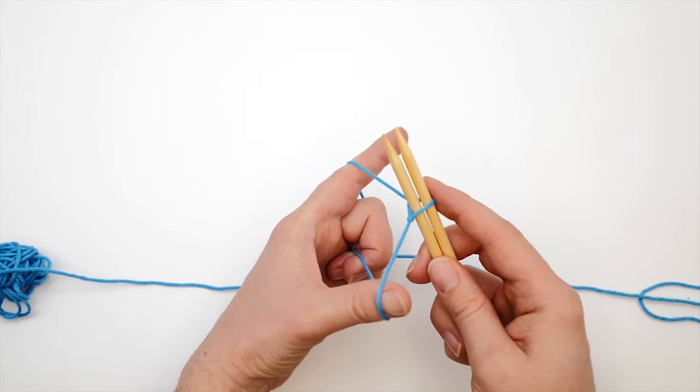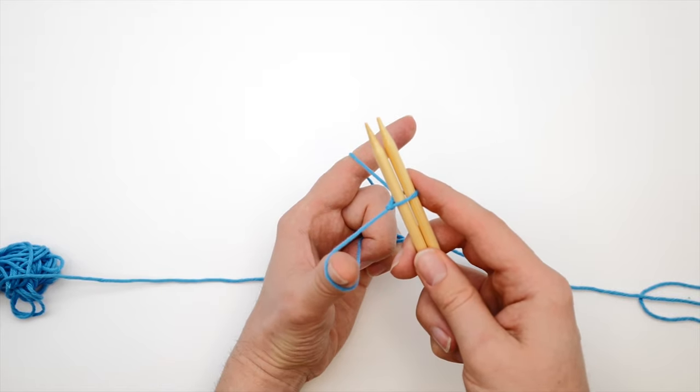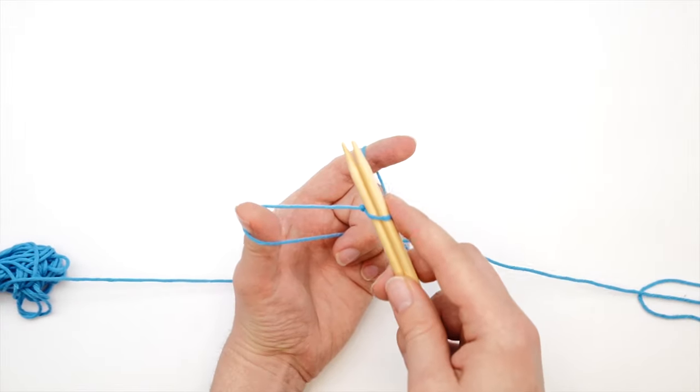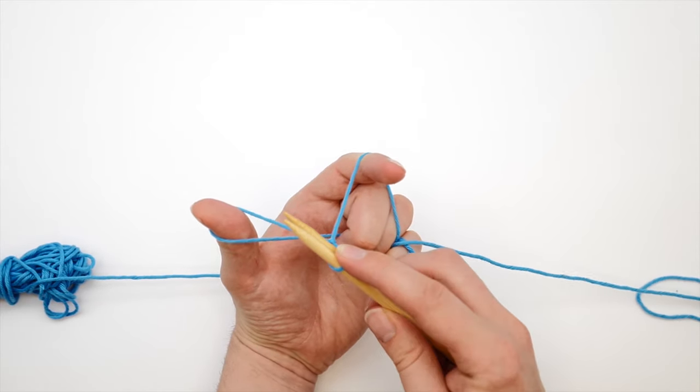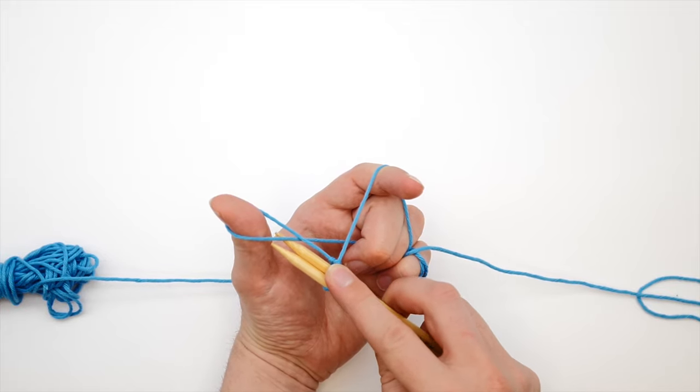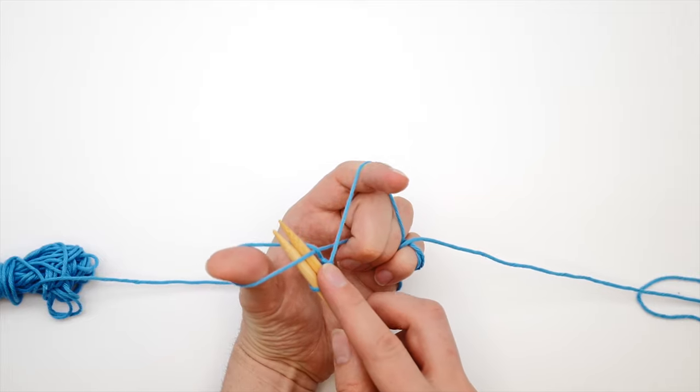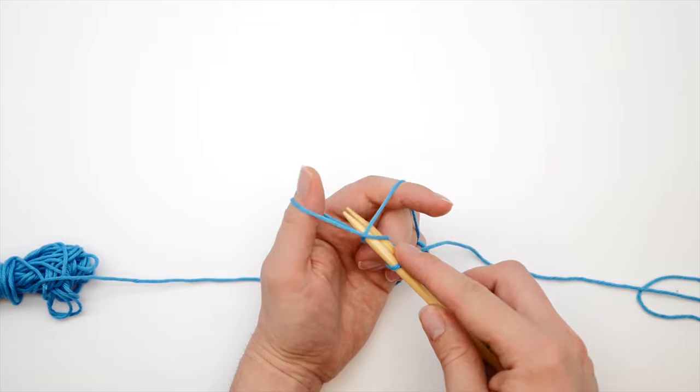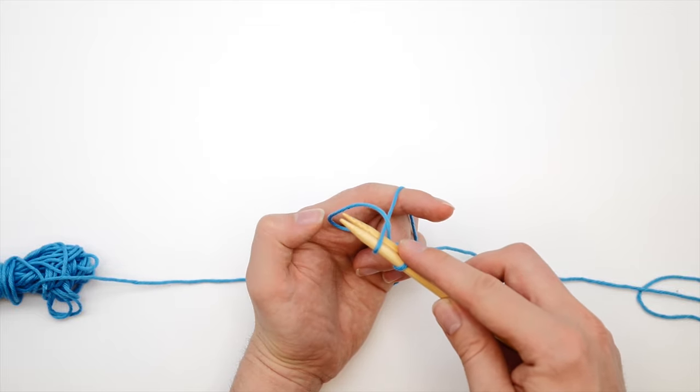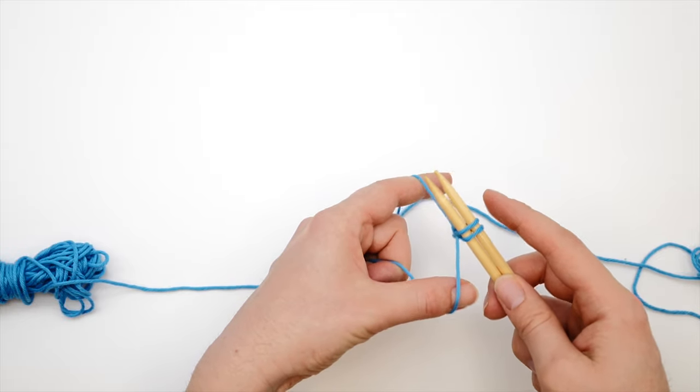Now from here, it's basically repeating this same motion over and over again. Pull the needles towards you to create another loop here. Then insert the needles into the loop around your thumb from below. Grab the yarn towards your index finger from above. Pull it through. Let loose of the loop. Tighten up. Second stitch.